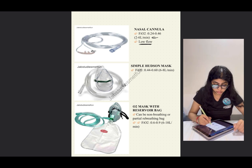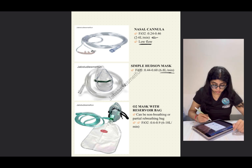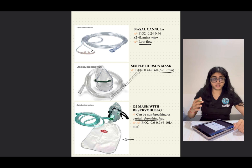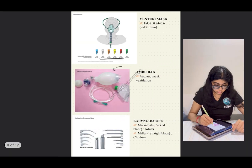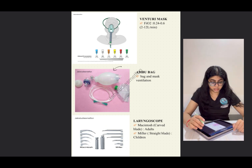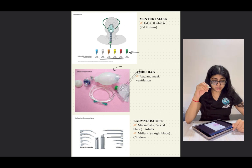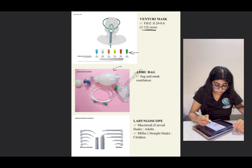A simple Hudson mask has a flow rate of six to eight liters per minute. An oxygen mask with reservoir bag — which is important for the exam — can be non-rebreathing or partial rebreathing, with a flow rate of six to ten liters per minute. The Venturi mask has a total range of two to twelve liters per minute, and the exam may ask about its color codes.